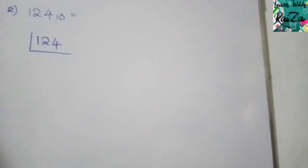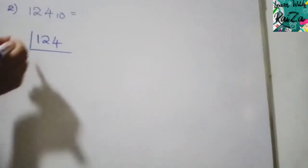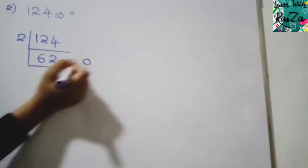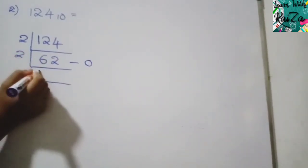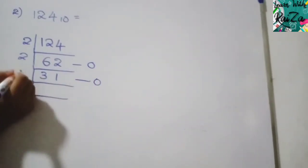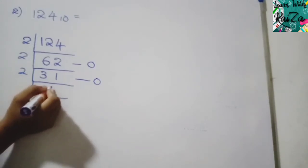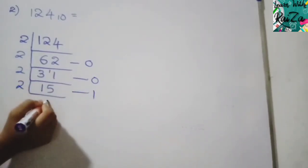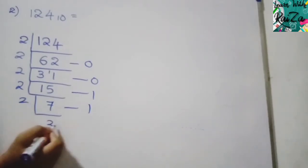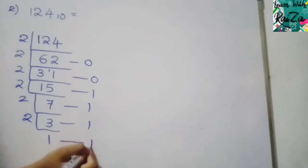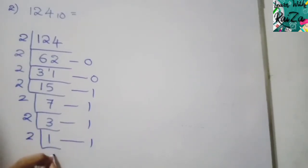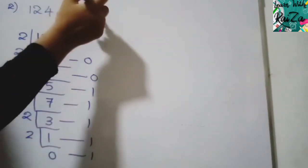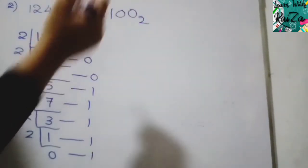Let's convert another decimal number: 124 to the base 10. Dividing: 124 ÷ 2 = 62, no remainder. 62 ÷ 2 = 31, no remainder. 31 ÷ 2 = 15 remainder 1. 15 ÷ 2 = 7 remainder 1. 7 ÷ 2 = 3 remainder 1. 3 ÷ 2 = 1 remainder 1. 1 remains. Reading remainders from bottom to top gives 1111100 to the base 2.